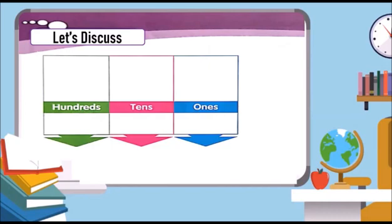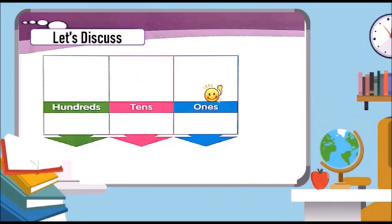This is a place value chart. We have a column for hundreds, tens, and ones. In the place value chart is a three-digit number. It is 238. Three-digit numbers are made up of digits in hundreds, tens, and ones. Let us find out the corresponding base 10 blocks for 238.